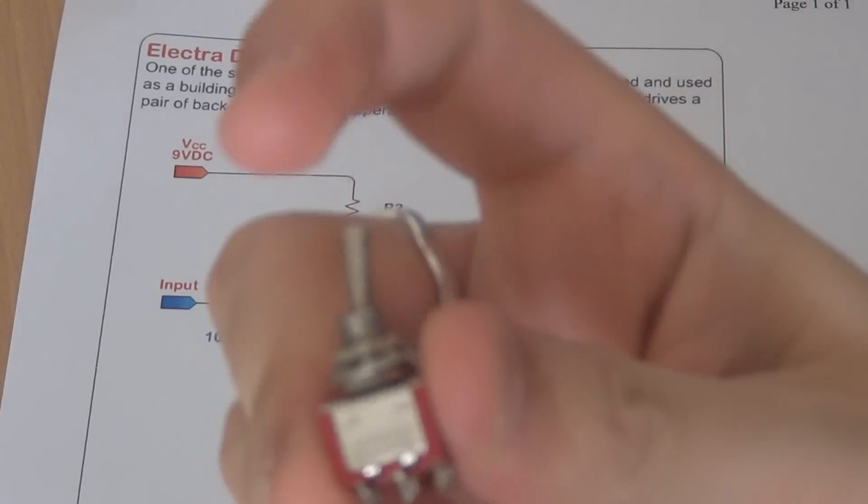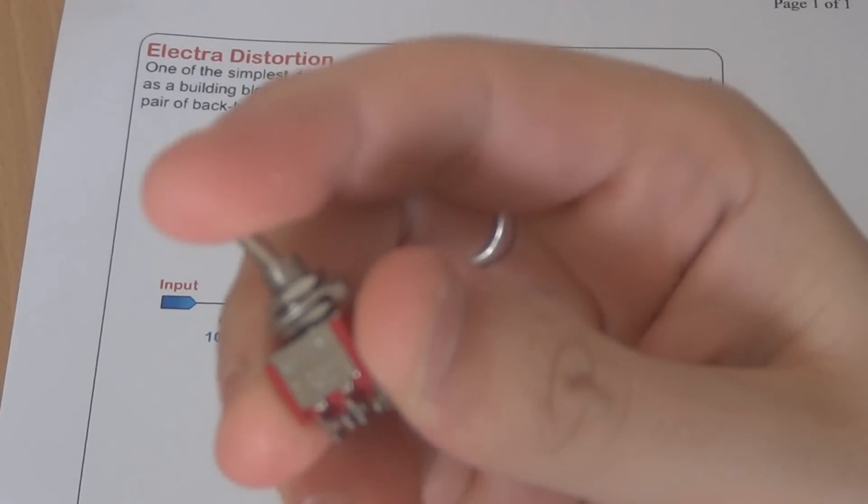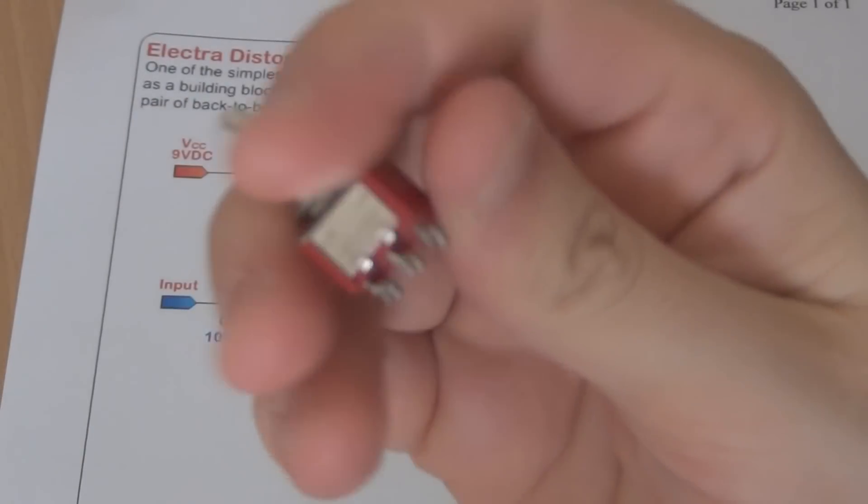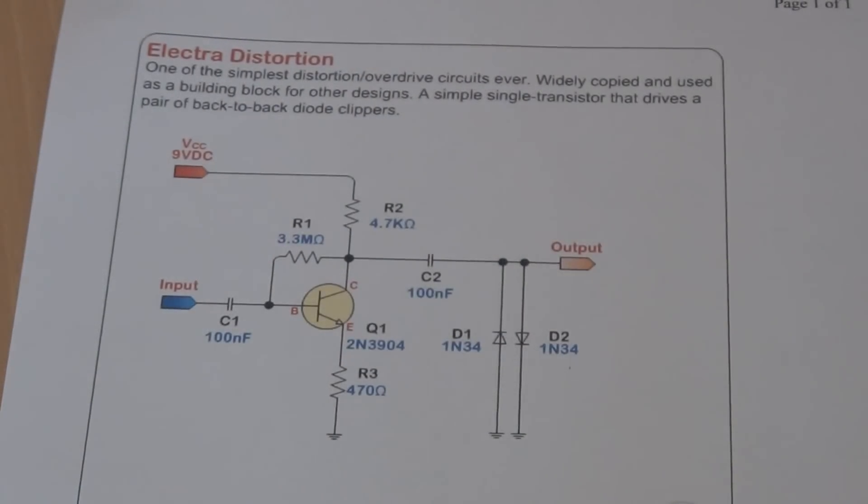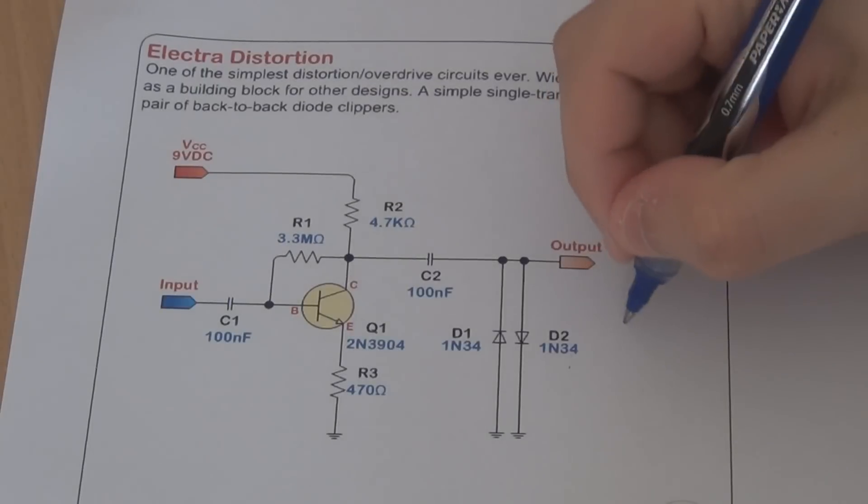This is an on-on toggle switch, just flicks between the two. It's not an on-off-on, don't get that one. You want an on-on and you can see on the bottom there are six lugs. So basically I'll just draw how that's actually going to work on here.